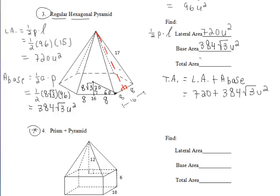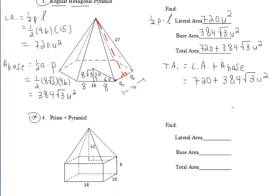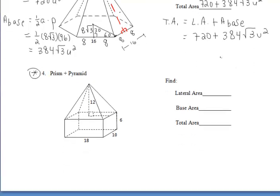To find the total area, we add the lateral area and base area together. Since 720 does not have a radical 3, our final answer is 720 plus 384 radical 3 units squared. We cannot combine them any further, so we leave the plus sign in between.